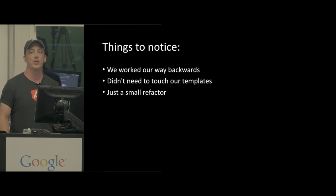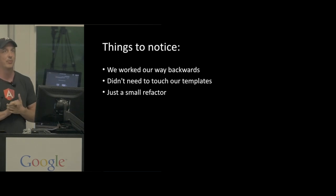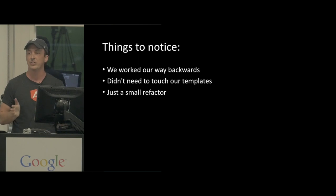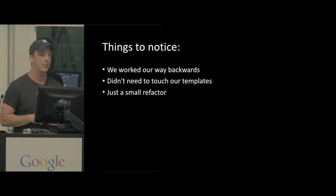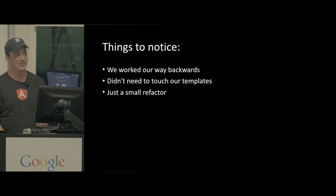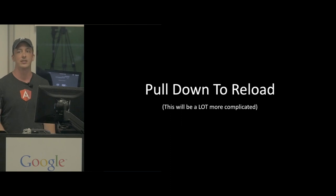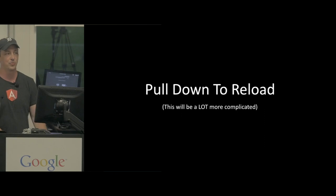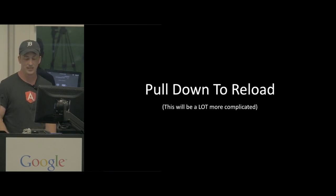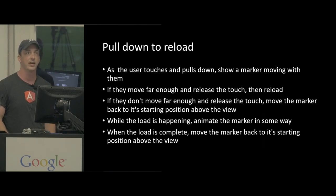Things to notice: try to work your way backwards. We didn't need to touch our templates at all, and it was a very small refactor to one property to get this done. That's a pretty simple feature. Let's move on to the big nasty one - the pull-down-to-reload. This is not going to be just one observable; we're going to be dealing with a lot of different things.